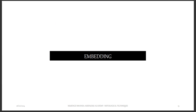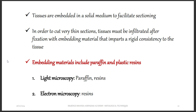Embedding involves placing tissues in a solid medium to facilitate sectioning. Embedding materials include paraffin and plastic resins. Paraffin makes the tissue more solid so it can be cut into thin pieces. For light microscopy, paraffin or resins can be used. For electron microscopy, only resins are used.